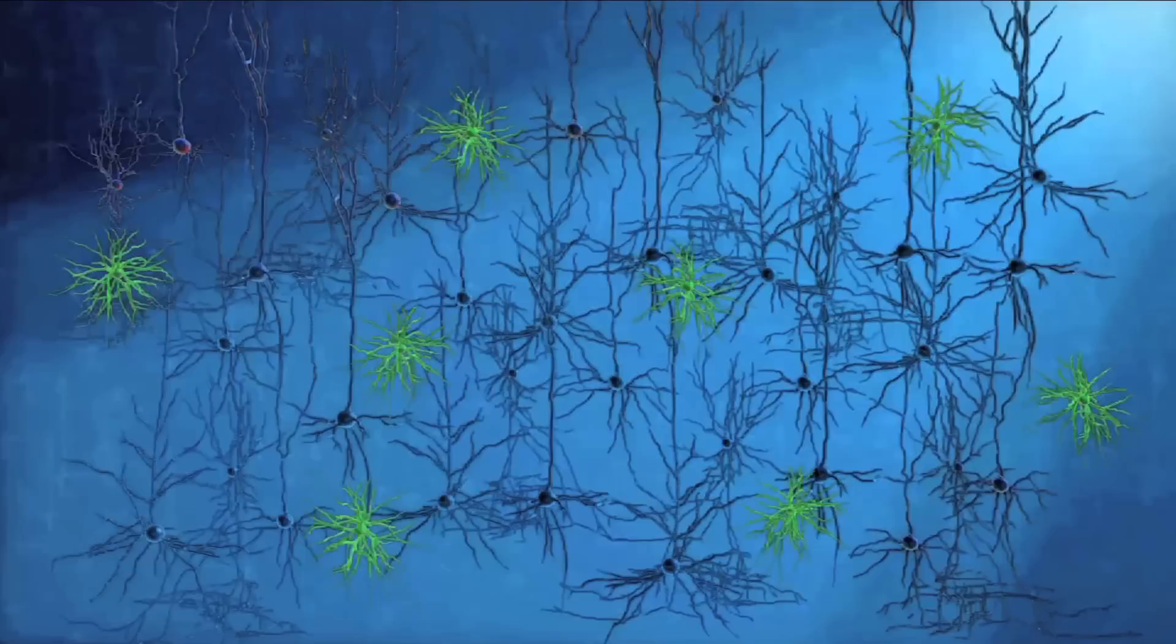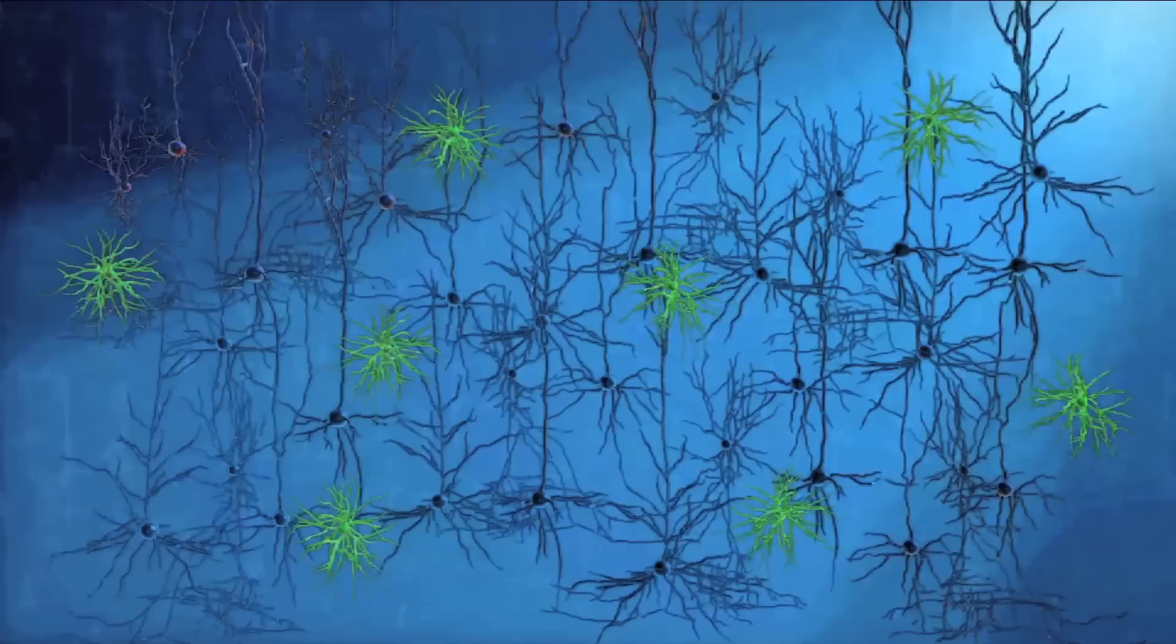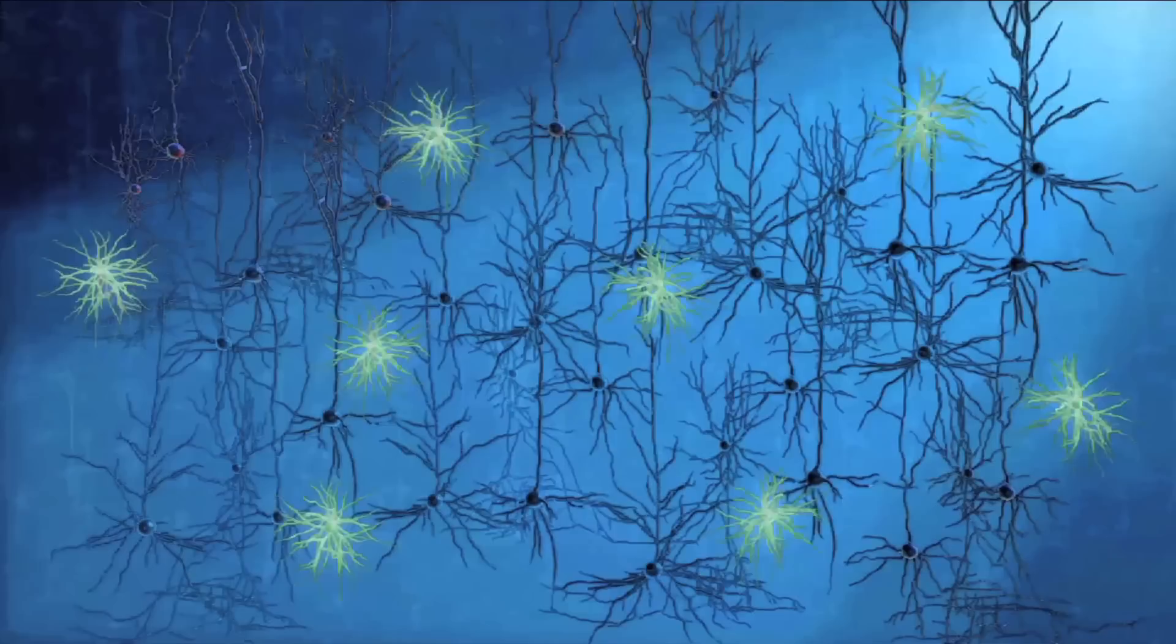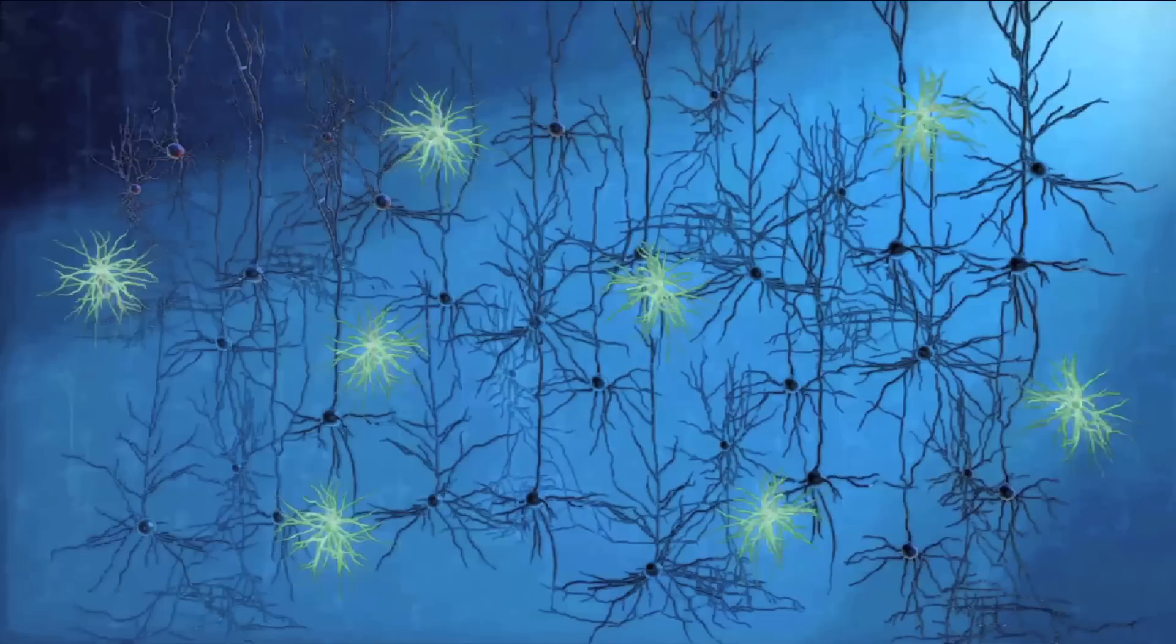Then pulses of blue light activate only the basket cells, while the other cells, for example the neighboring pyramidal cells, are not affected. So if a specific brain disorder is associated with dysfunctional basket cells, it would be possible to augment the activity of these cells and possibly repair brain function. And these tools don't just activate neurons, they can silence them as well.